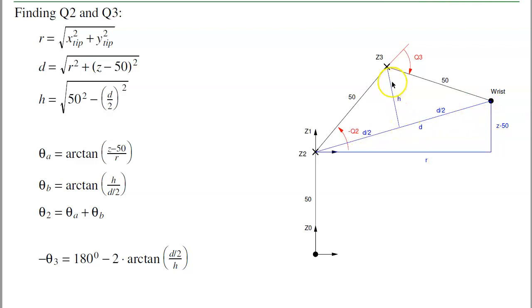This is half of d. That side, h, I can find from a right triangle. 50 squared minus d over 2 squared is h squared. Take the square root.